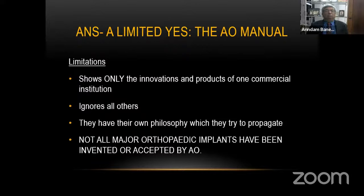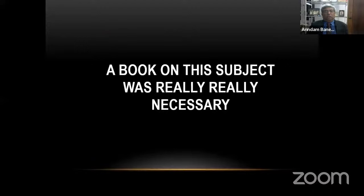Has there been a manual before? Yes, there has been one very good manual — the AO Manual. But the AO Manual has had several limitations. The main one being that it is the product of one commercial institution, and it therefore ignores the work of all other groups who have done innovative work. AO has their own philosophy which they always try to propagate, but not all major orthopedic implants have been invented or even accepted by AO. So the AO work is fantastic, but it is incomplete. A book on this subject was really, really necessary.